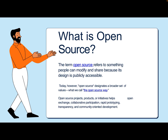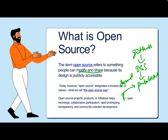So first, what is open source? The term open source basically refers to something people can modify and share because its design is publicly accessible. If you have a GitHub project or open source software (OSS), you can publicly launch it so that anybody can modify the code or raise a PR to enhance and make it better. Open source is designated a broader set of values — what we call the open source way.